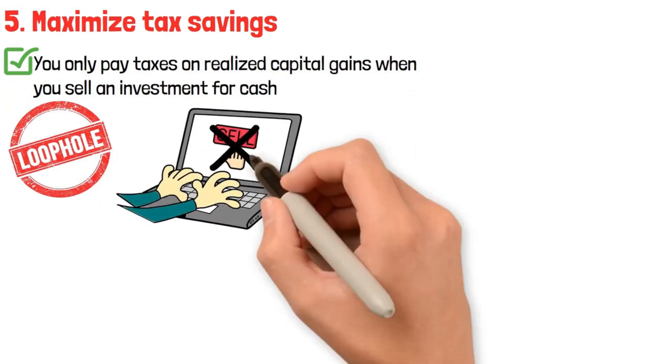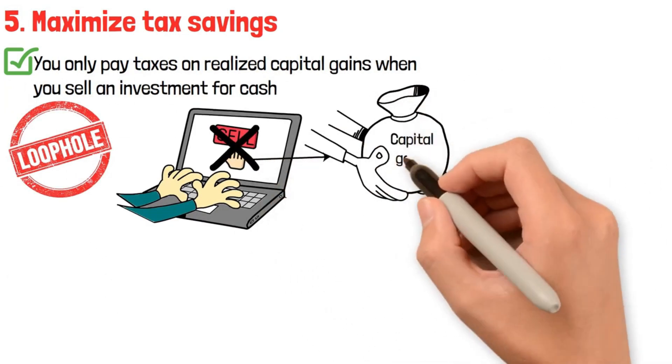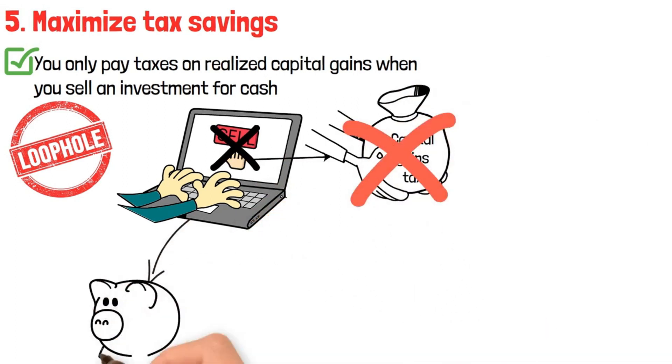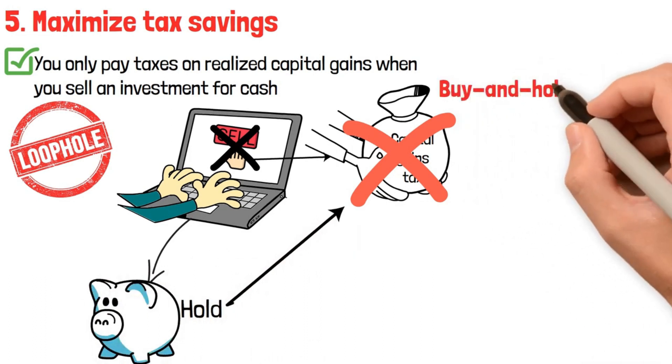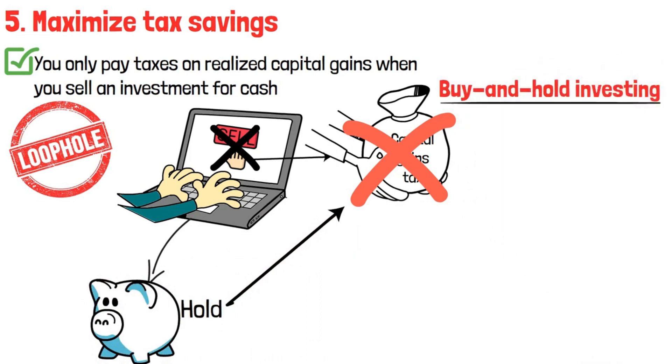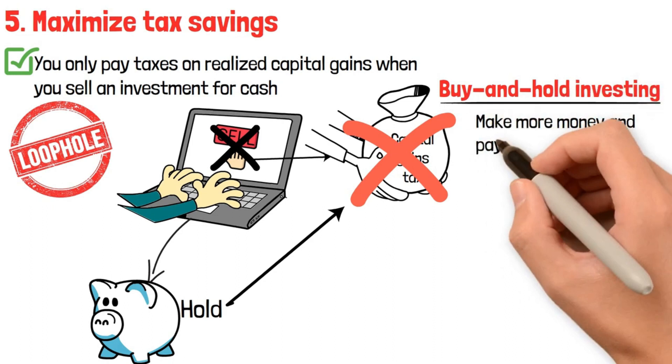As long as you don't sell, you won't have to pay capital gains taxes, which can be large. You can hold your investments and delay paying capital gains tax forever. So buy and hold investing can help you win in two ways. You'll likely make more money and pay less to the IRS.